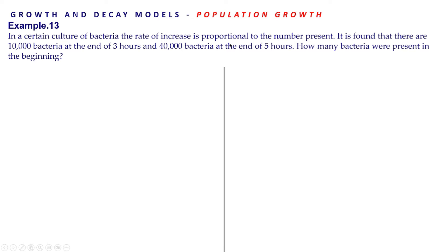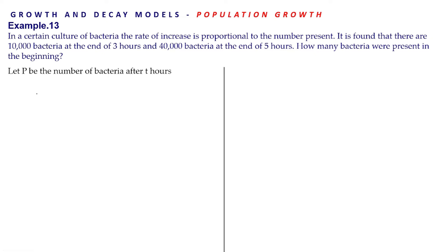In a population growth model, the rate of increase is proportional to the number present. Let P be the number of bacteria after T hours. Then the rate of increase in the number of bacteria is proportional to the number present, meaning dP/dt is proportional to P.